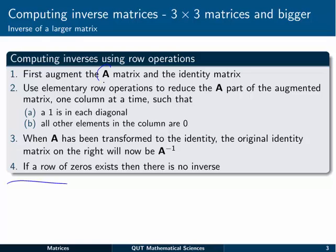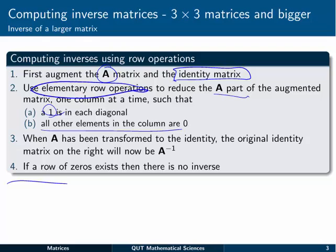First thing is we augment the matrix we're trying to find the inverse of, let's call it A, and the appropriate or same-sized identity matrix. Then we use elementary row operations, the same ones as from Gaussian elimination—swap rows, multiply rows by constants, and adding multiples of rows—to reduce the A part of the augmented matrix into the identity matrix. So basically one column at a time, we're going to try to get ones in the diagonals, and everything else in that same column equal to zero, using elementary row operations.